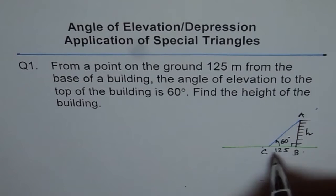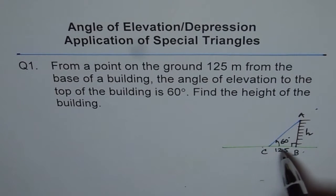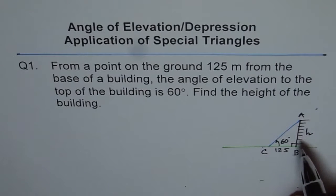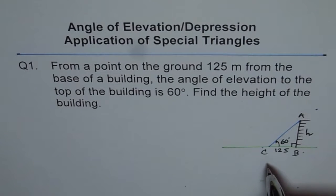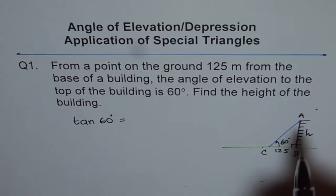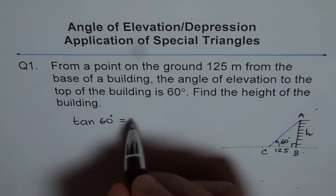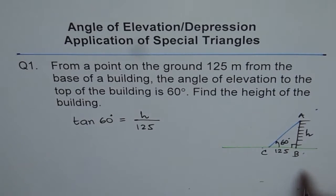This forms a right triangle. In this right triangle we know the adjacent side and want to find the opposite side. Whenever you are relating the adjacent and opposite sides, the trigonometric ratio to use is tangent. So we write tan 60, because tangent equals opposite over adjacent — the height is the opposite and 125 is the adjacent.